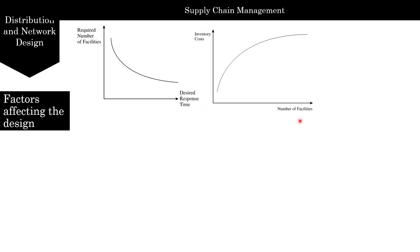Looking at inventory costs versus number of facilities: to decrease inventory costs, firms try to consolidate and limit the number of facilities in their supply chain network. For example, with fewer facilities, Amazon is able to turn its inventory 10 times a year, whereas Barnes and Noble, with a huge number of facilities, achieves only about three turns a year.